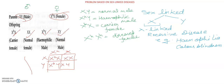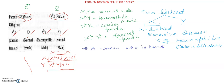Now suppose a problem comes like this — I am going to tell you one problem. Write this question, pause the video, and try to solve it by yourself based on this chart. The question is: A woman who is hemophilic is married to a normal male. How many offspring are suffering from hemophilia, that is, how many offspring are diseased?